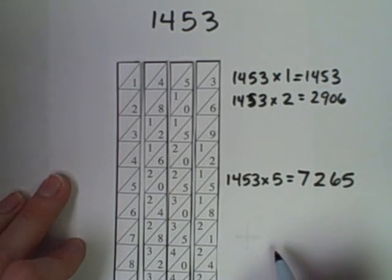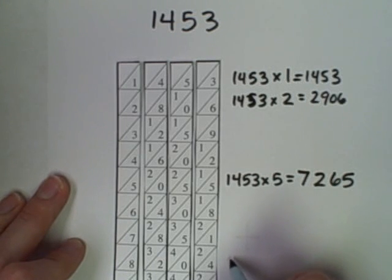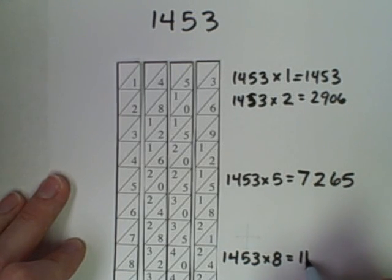And at the 8 row, 1,453 times 8 would be 11,624.